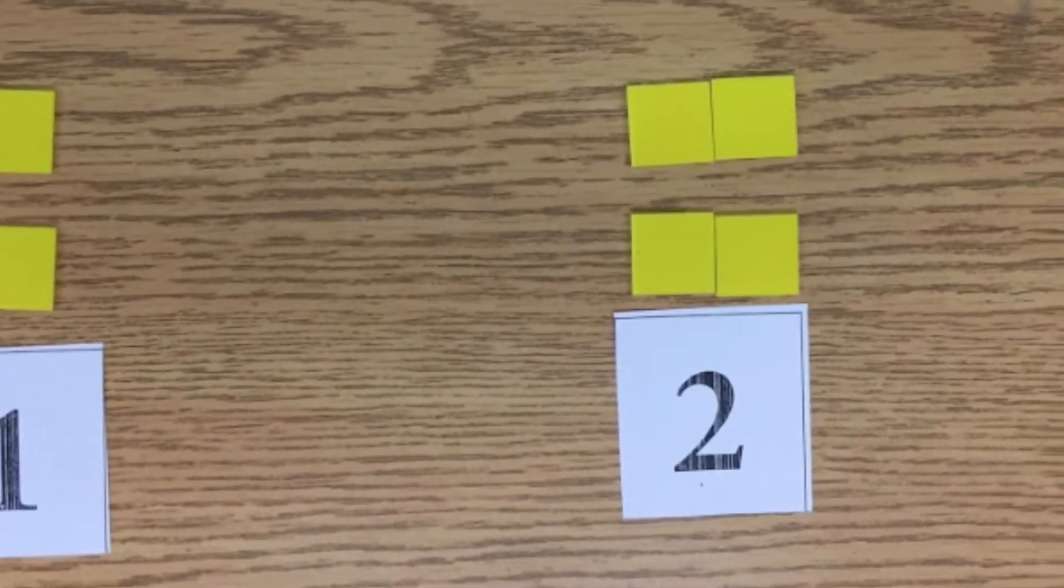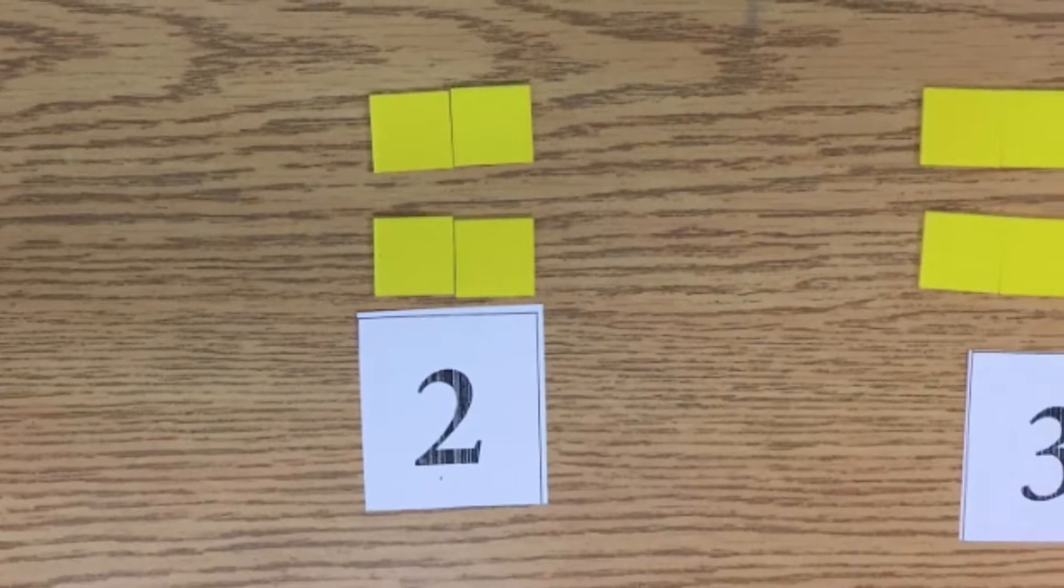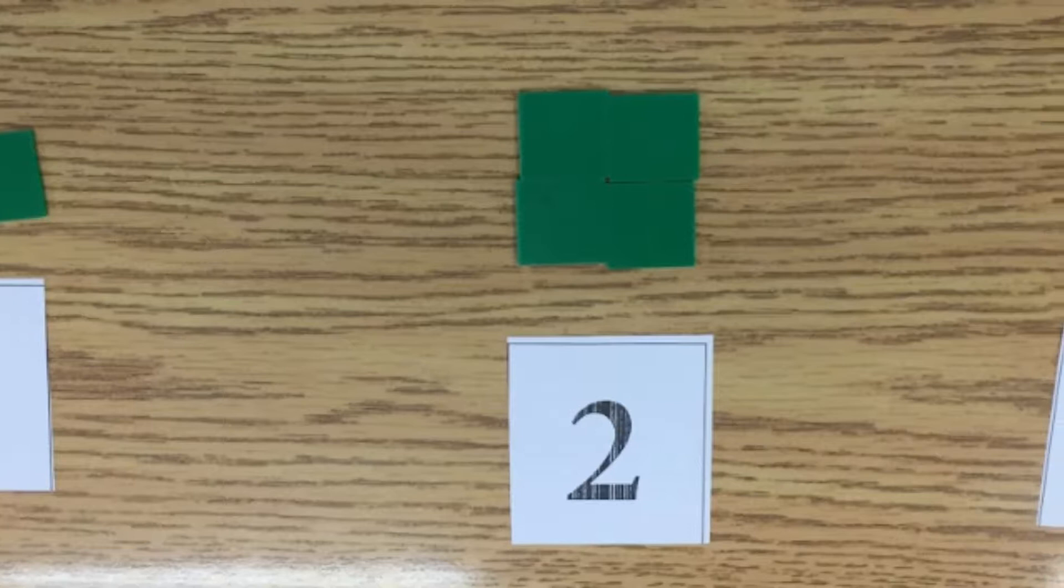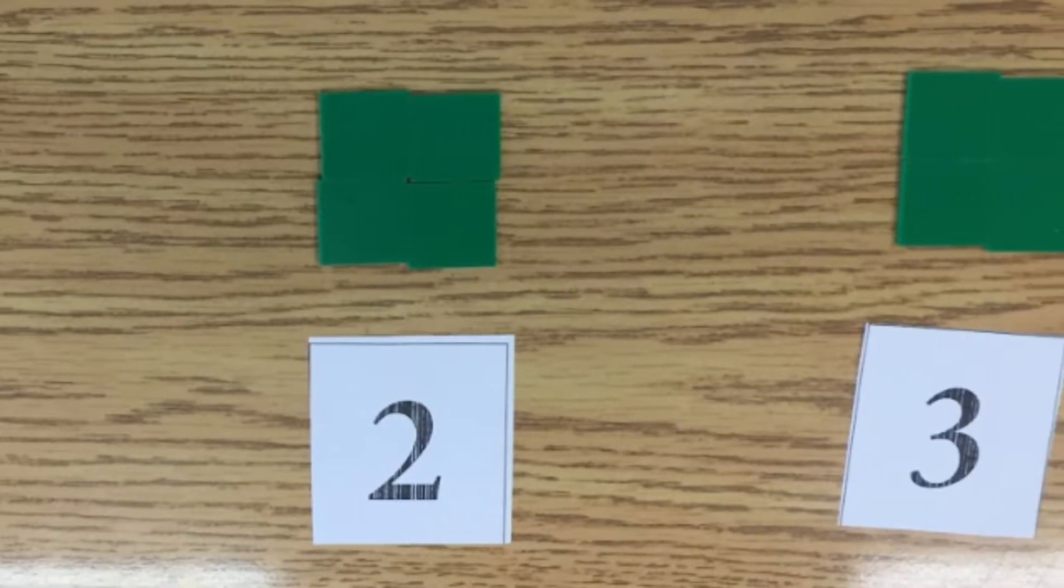Some showed their multiplicative thinking by having two groups of one, two groups of two, two groups of three to show what happens at each position number. And some made rectangles where the length and width are that rectangle: one by two, two by two, two by three.